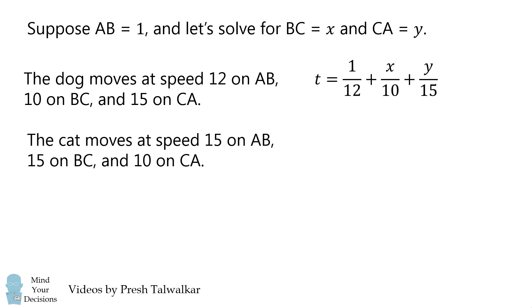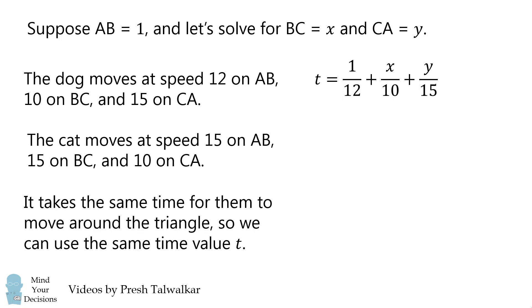Let's write a similar equation for the cat. To do this, we have to remember that it takes the same time for them to move around the triangle, so we can use the same time value of t. So the equation for the cat is that t is equal to 1 over 15, plus x over 15, plus y over 10.